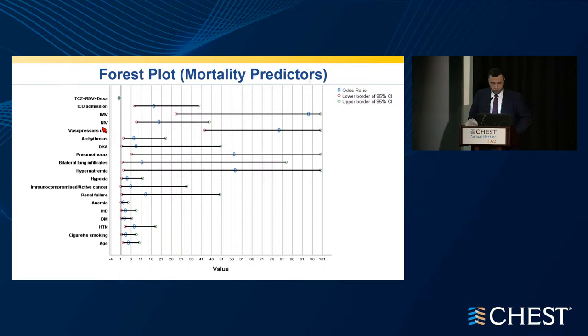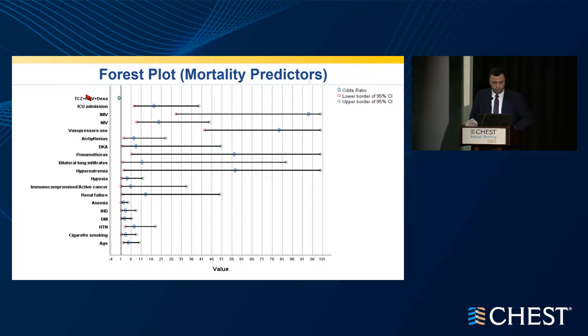Vasopressor use, the need for non-invasive ventilation including CPAP or BiPAP, use of invasive mechanical ventilation, and need for ICU admission were all associated with higher risk of death. Among these, invasive mechanical ventilation and vasopressor use had the highest odds ratios for in-hospital mortality risk, followed by developing pneumothorax during hospitalization and hypernatremia at time of admission — these four factors were the most significant. On the other side, use of triple therapy — the combination of tocilizumab, remdesivir, and dexamethasone — was associated with a reduction in mortality risk among hospitalized COVID-19 patients.